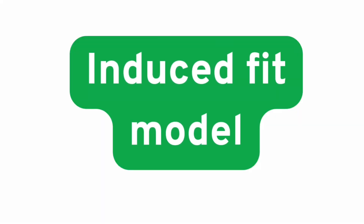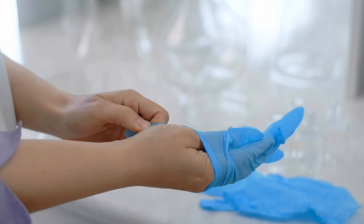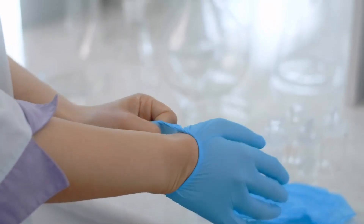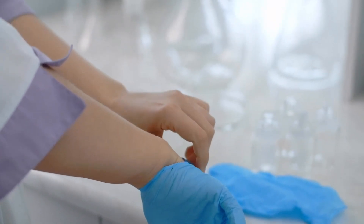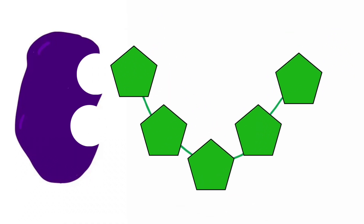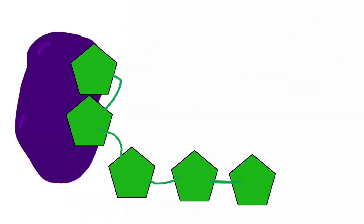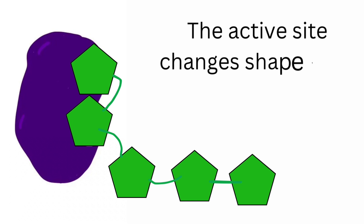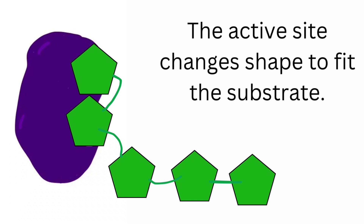In addition to the lock and key model, there's a second model of how enzymes work called the induced fit model. To help us understand this, we can think of a pair of gloves. When you put on a pair of gloves, the shape of the glove changes to fit around the shape of your hand. In the induced fit model, the shape of the active site doesn't exactly match the shape of the substrate, but as the substrate binds to the active site, this causes the shape of the active site to change as it fits around the substrate. This process is thought to put extra strain on the bonds between the molecules, helping them to break.